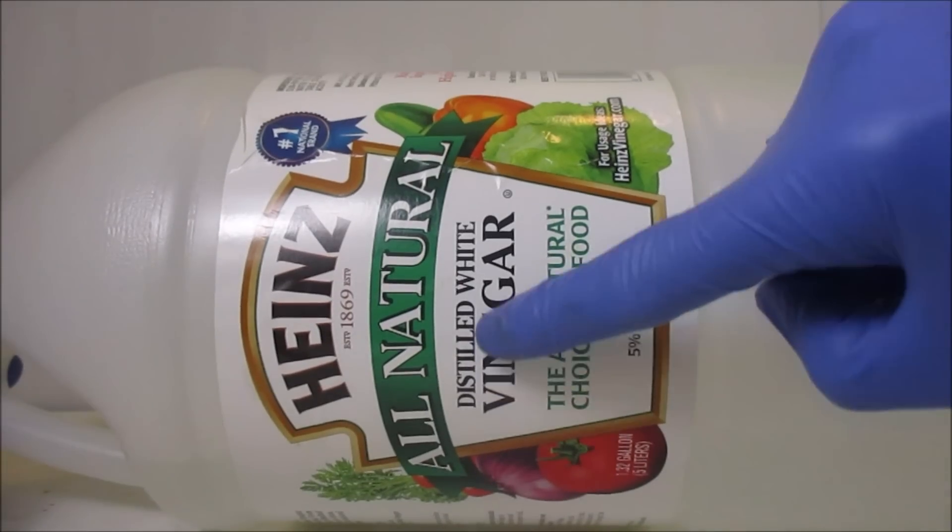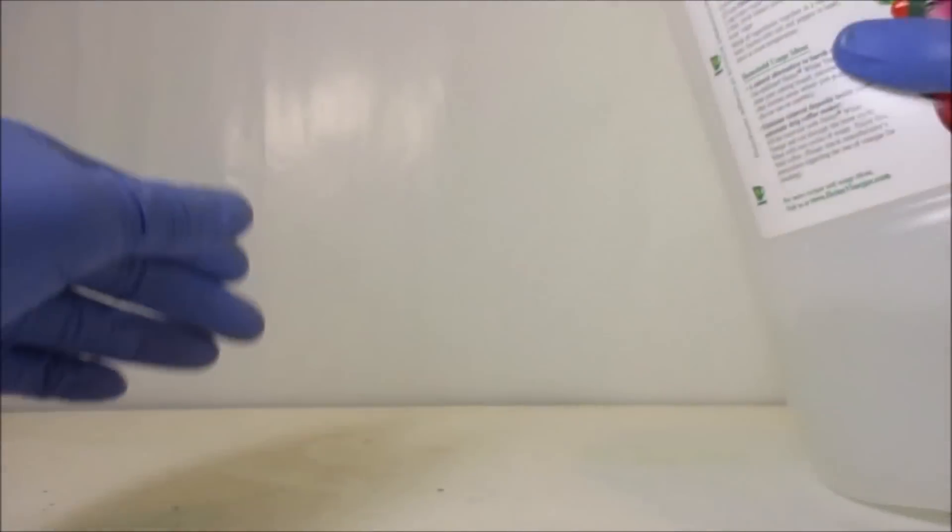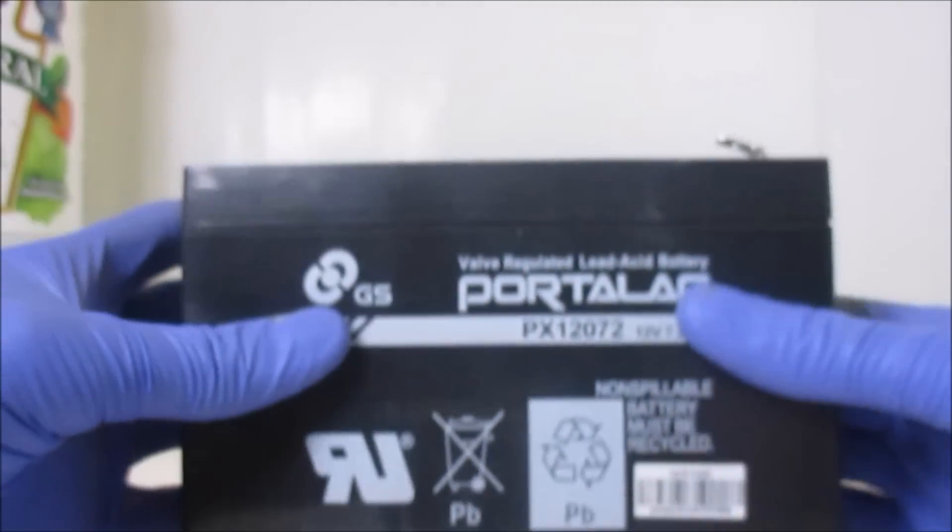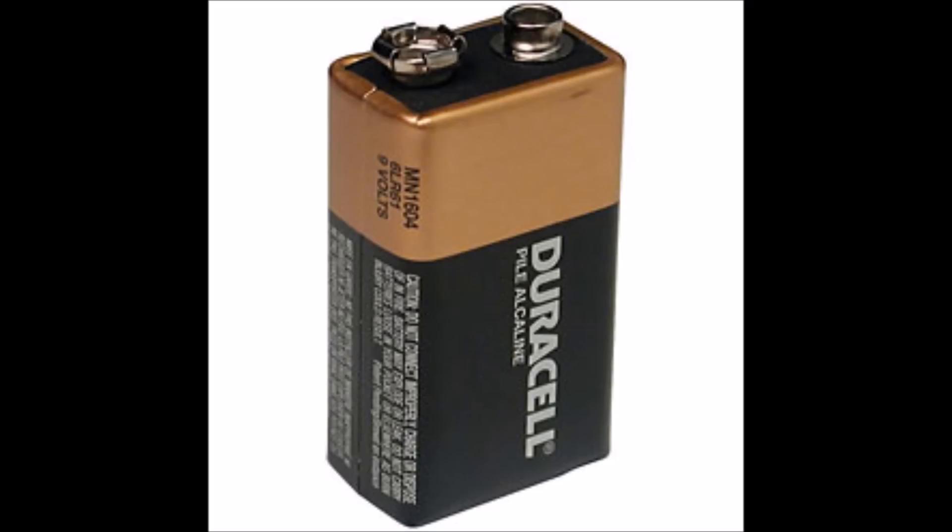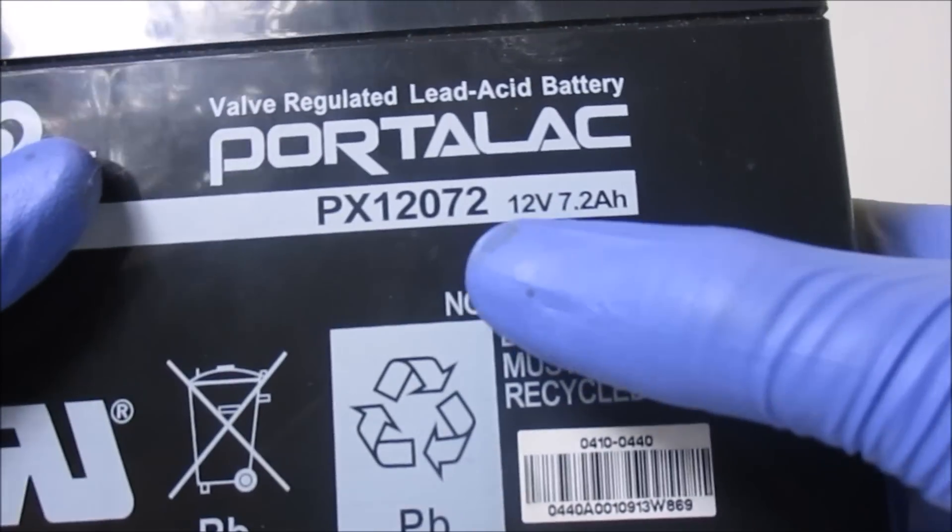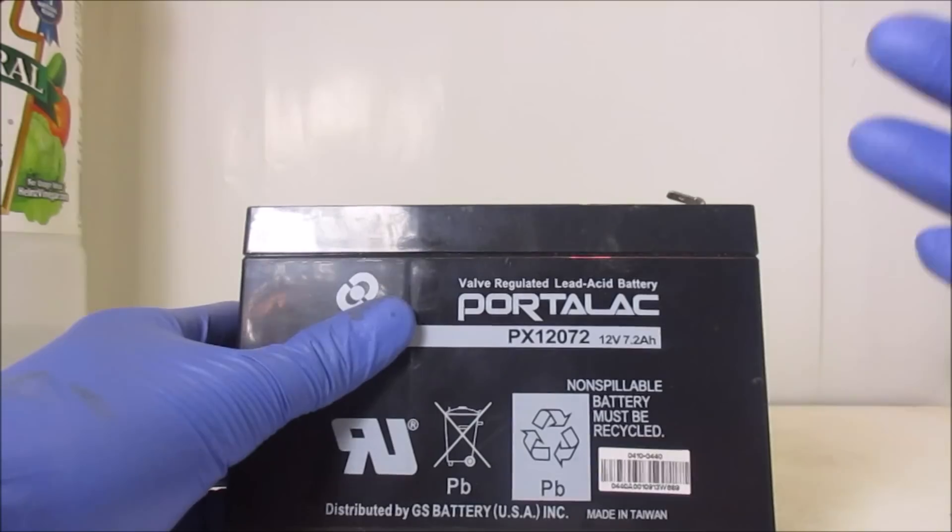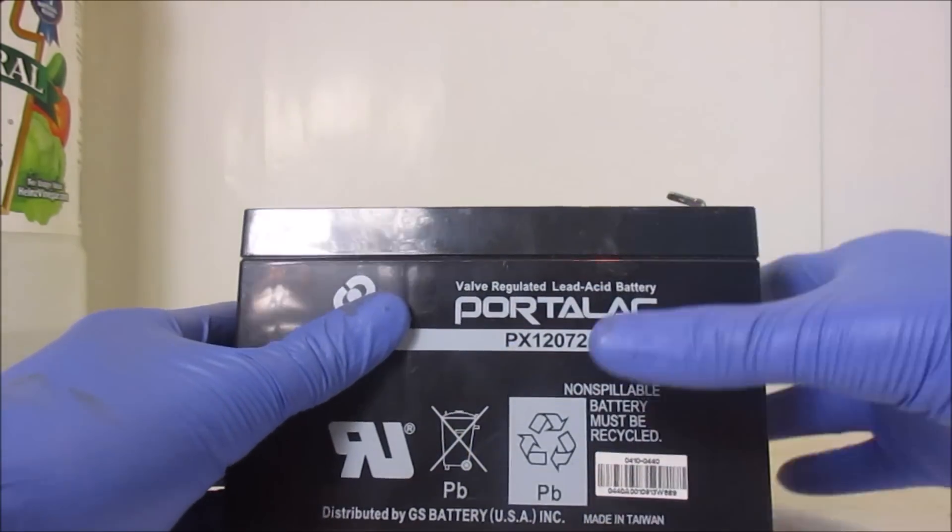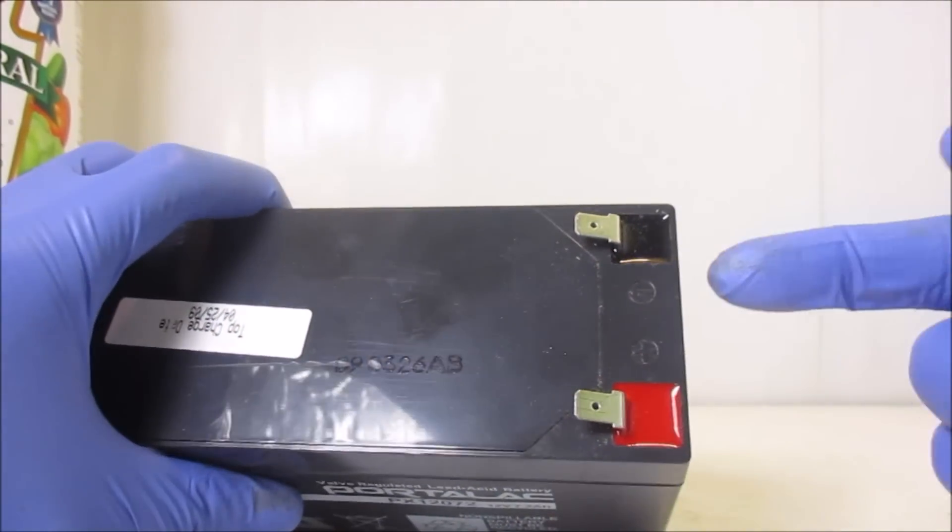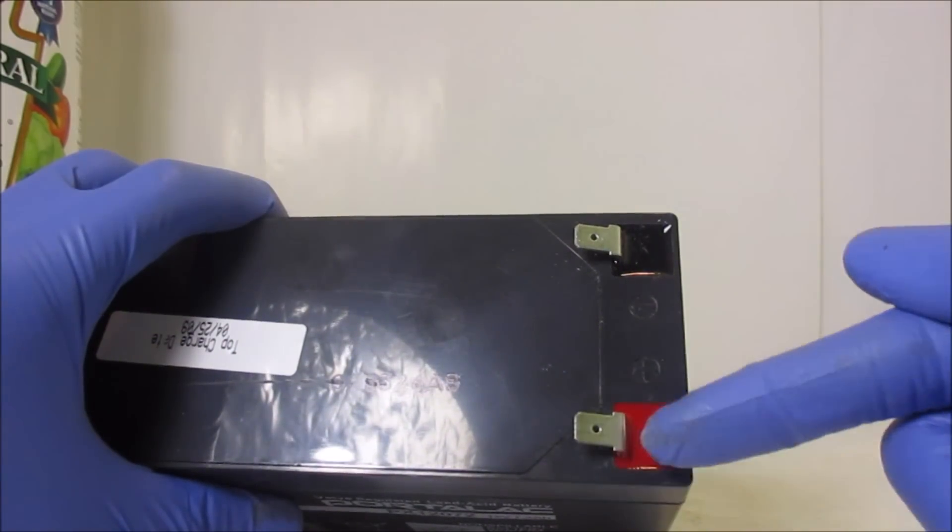In order to start this project, you are going to need distilled white vinegar. You are also going to need a battery. You can use a 9-volt battery, but in this case I'm going to be using a 12-volt 7.2-amp battery. It does not matter what type of battery you use as long as it is 9-volt. For the battery I am using, the link will be in the description below.